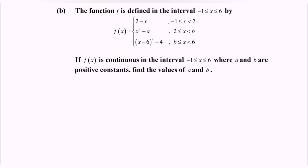The function f is defined on the interval negative 1 to 6 by a piecewise function. We need to check if f(x) is continuous, and given that a and b are positive constants, find the values of a and b.